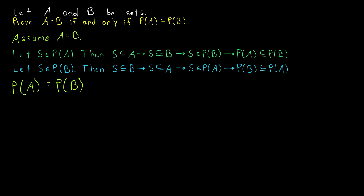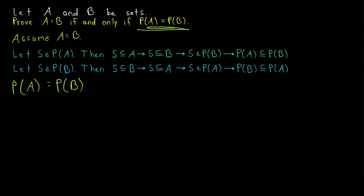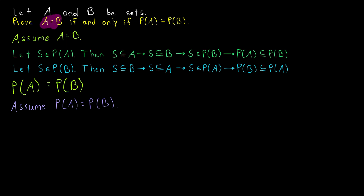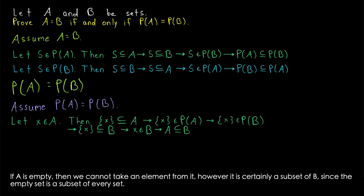Next, we need to prove that if the power set of A equals the power set of B, then A and B are equal. So let's assume that the power set of A equals the power set of B. We want to prove that A equals B, and we do this in the same sort of way: we need to show that A is a subset of B, and we need to show that B is a subset of A. Here is the proof that A is a subset of B.